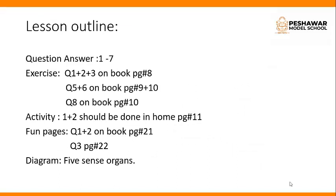Turn your page and give the heading of unit number 1, then the lesson outline. There are 7 question answers in this unit. Exercise questions number 1, 2, 3 on book page number 8; questions number 5 and 6 on book page numbers 9 and 10; and question number 8 on book page number 10. Question number 8 is the diagram in which you label different parts, different organs, and different systems. Then activity 1 and 2 should be done at home on page number 11. Fun pages questions number 1 and 2 on book page number 21, and question number 3 on page number 22. Then there is a diagram of 5 sense organs.